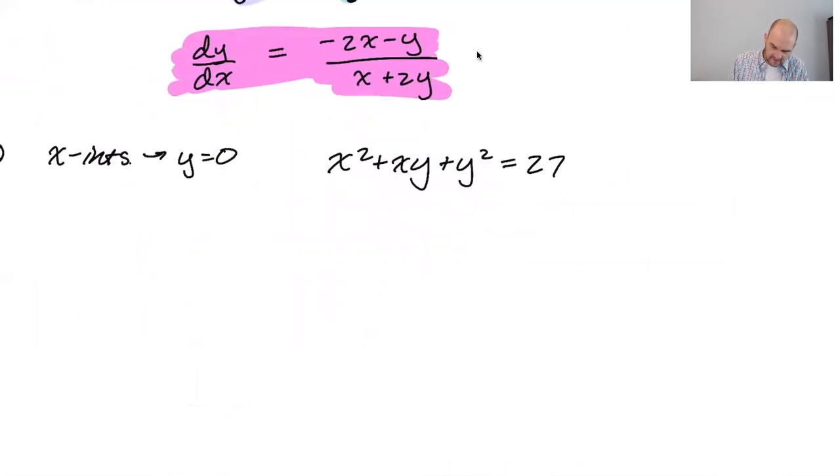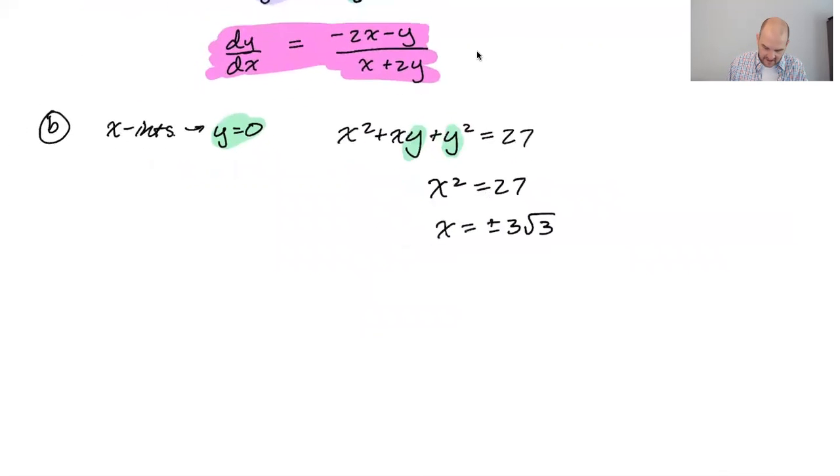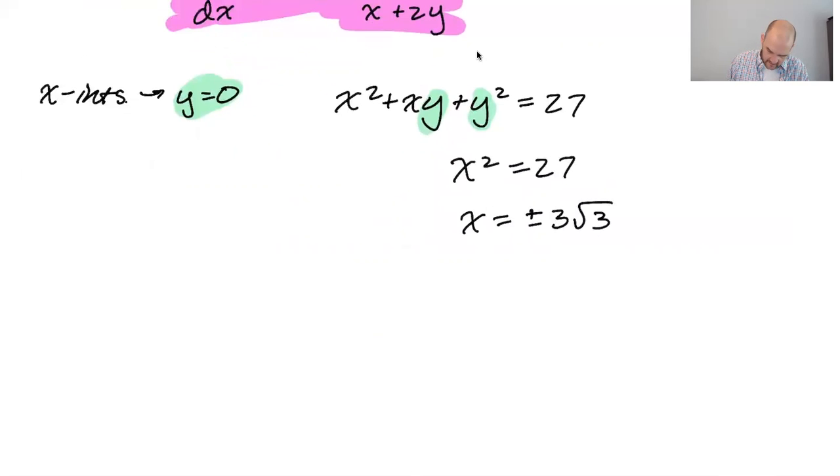All right. So I'm going to replace every y with zero. If y is equal to zero, then y is equal to zero, y is equal to zero. We just get x squared equals 27. So x equals plus or minus radical 27. I'm going to use 3√3, but you can leave it as radical 27. There's no need to do what I did, so keep that in mind. So the ordered pairs are going to be 3√3, 0 and then negative 3√3, 0. All right, so those are our ordered pairs.